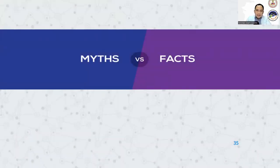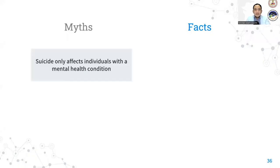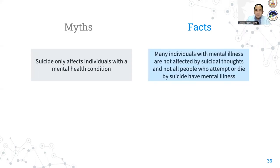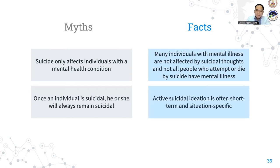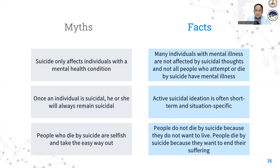So now let's debunk some myths about suicide. First myth is that suicide only affects individuals with a mental health condition. This is wrong as many individuals with mental illness are not affected by suicidal thoughts and not all people who attempt or die by suicide have mental illness. Once an individual is suicidal, he or she will always remain suicidal. This is also wrong. Active suicidal ideation is often short term and situation specific. Third, people who die by suicide are selfish and take the easy way out. Again, this is a myth. People do not die by suicide because they do not want to live. People die by suicide because they want to end their suffering.